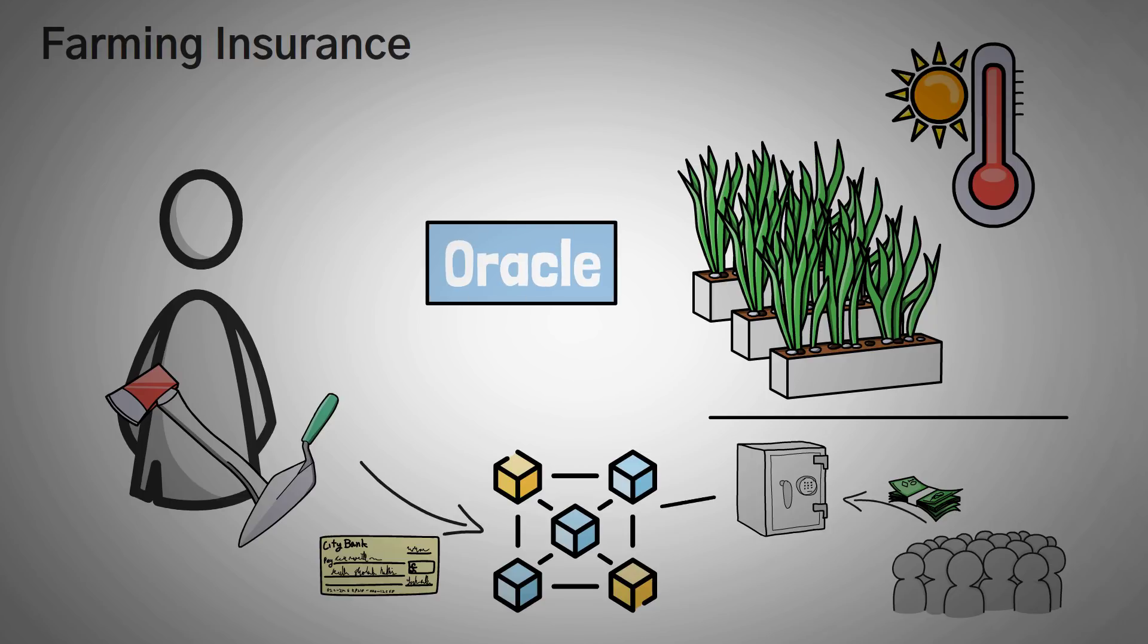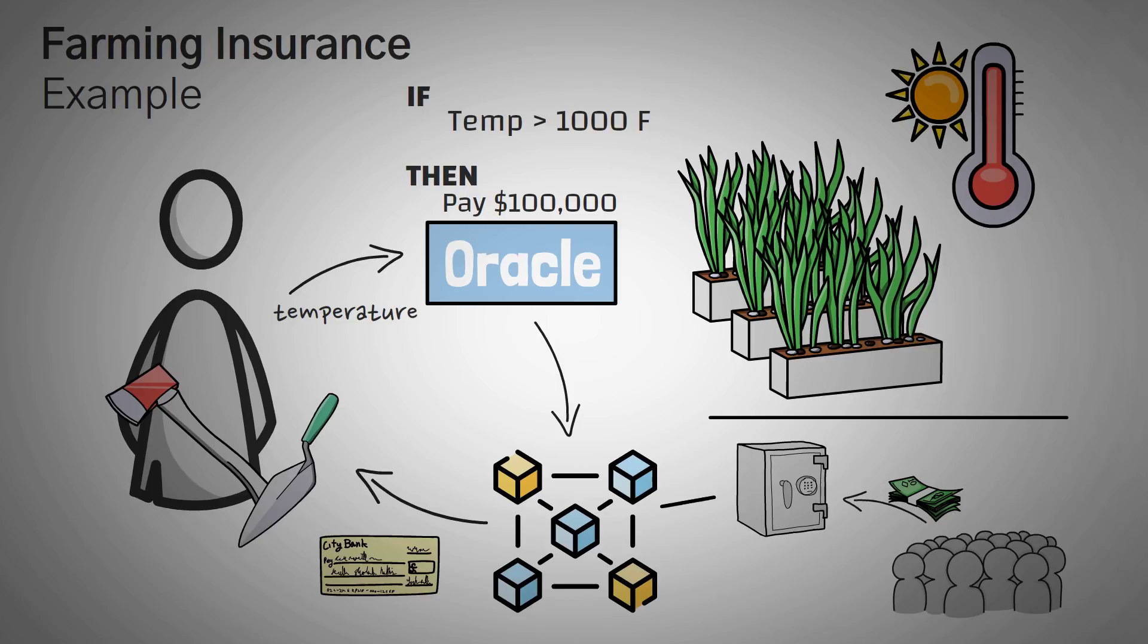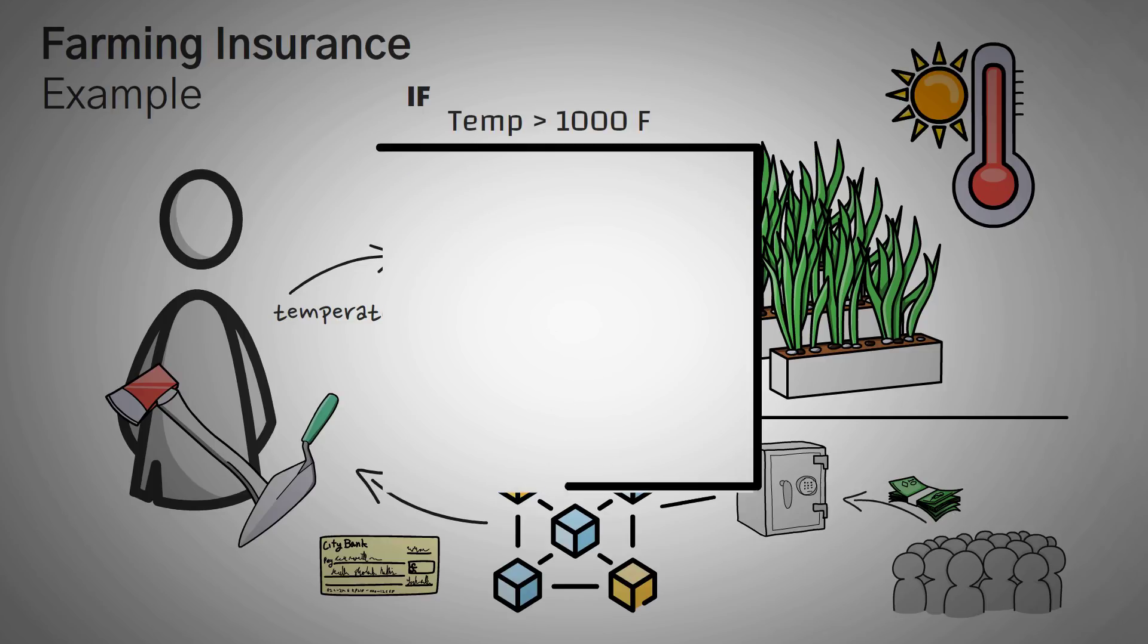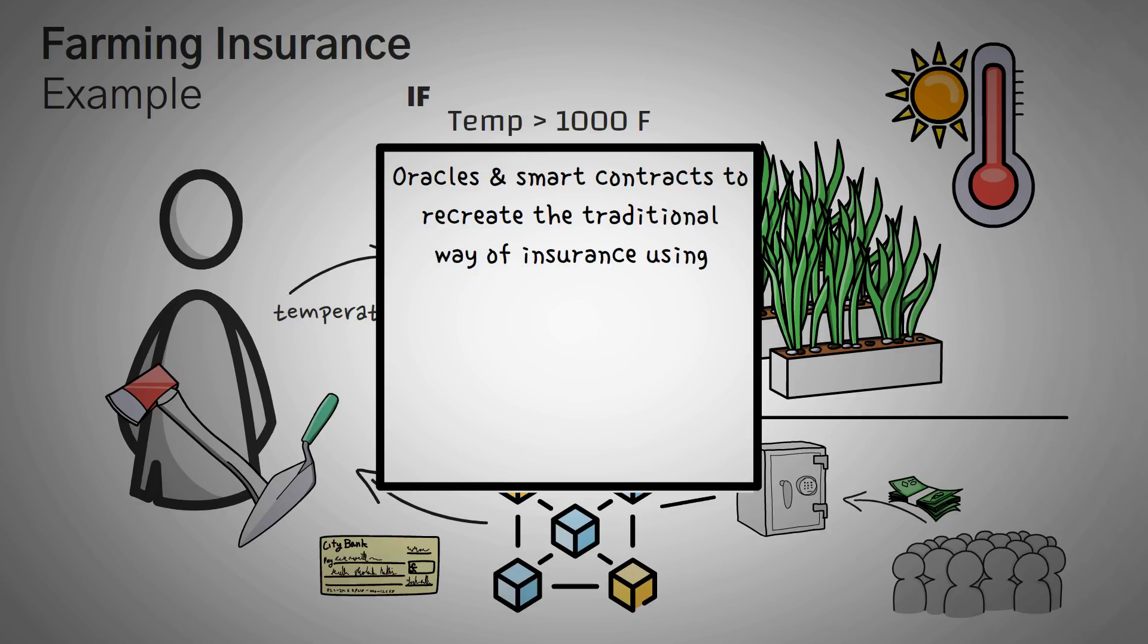An oracle would be needed here, because how does the blockchain know if there's a drought? Well, you can just feed it data of the temperature of your location, and if it looks at the temperature and it's more than 100 degrees Fahrenheit for more than 10 days, we can say that you should be paid. Of course, this is just an example, and how insurance works is far more complicated than this. I just wanted to show another example of how we can use oracles and smart contracts to basically recreate the traditional way of using insurance that allows us to use a decentralized, trustless, and probably more affordable method using blockchain technology.